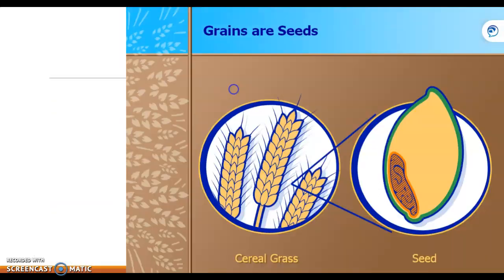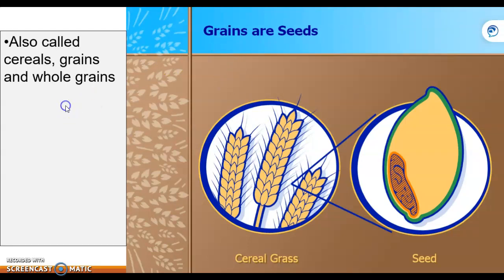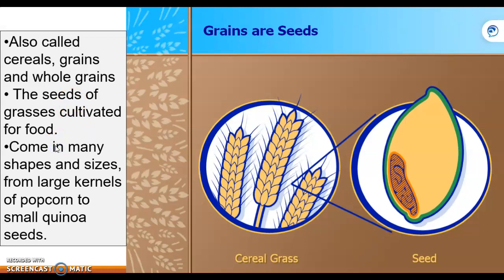So what is a grain? Grains are the seeds of cereal grasses, also called cereals. The seed of grass is cultivated for food, and they come in many shapes and sizes — from big kernels of popcorn to small quinoa seeds.